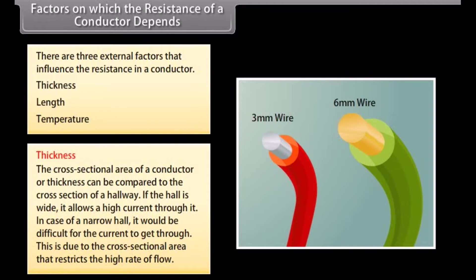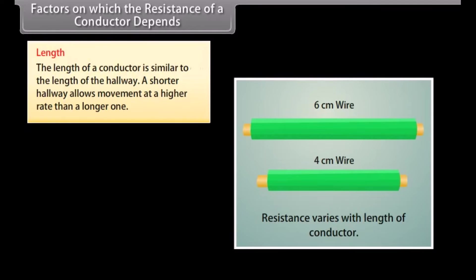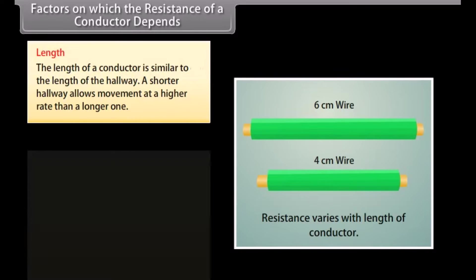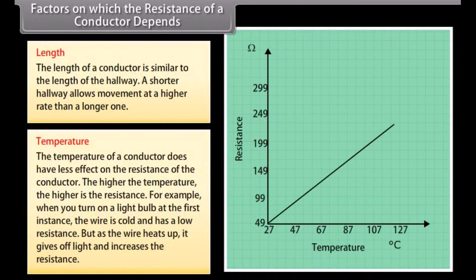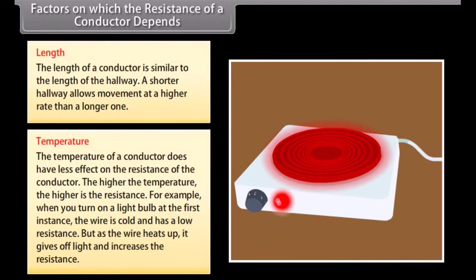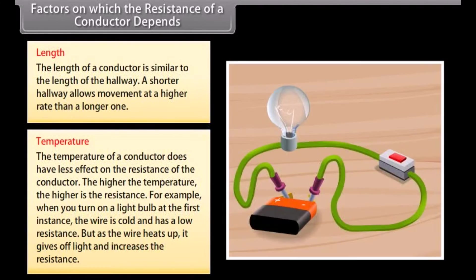Length: the length of a conductor is similar to the length of a hallway — a shorter hallway allows movement at a higher rate than a longer one. Temperature: the temperature of a conductor significantly affects its resistance. The higher the temperature, the higher the resistance. For example, when you turn on a light bulb, the wire is initially cold and has a low resistance, but as the wire heats up it gives off light and the resistance increases.